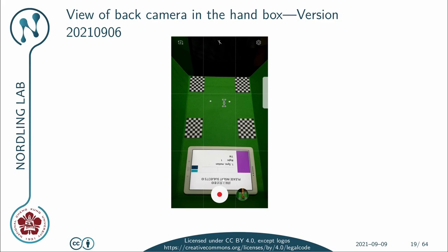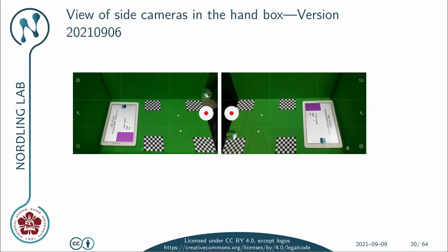We have these two markers to guide the placement of the hand. If we take a look from the two side cameras, we have the left camera and the right camera, and we of course see exactly the same objects in each.